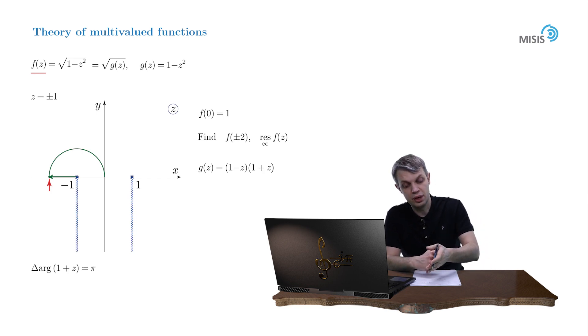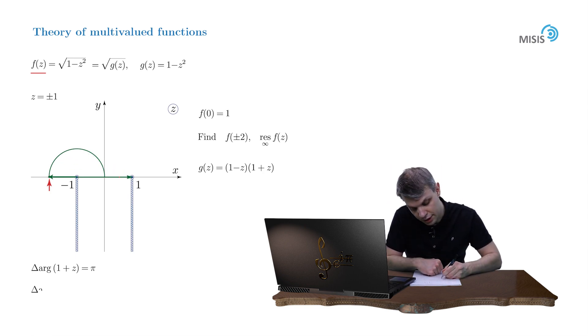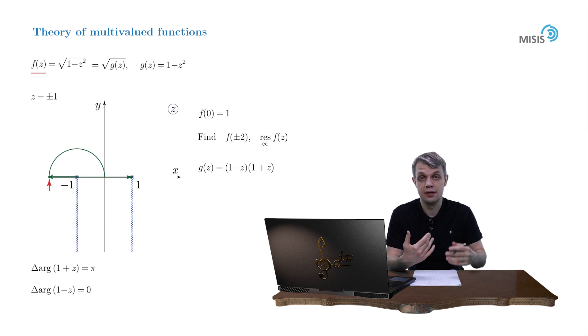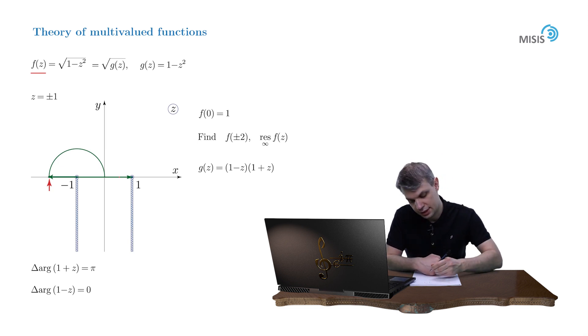While the arrow representing number 1 minus z just sways a little but doesn't rotate, and its change of argument is 0. As before, we extract the change of argument of our g-function as a sum of these two changes, which is pi.